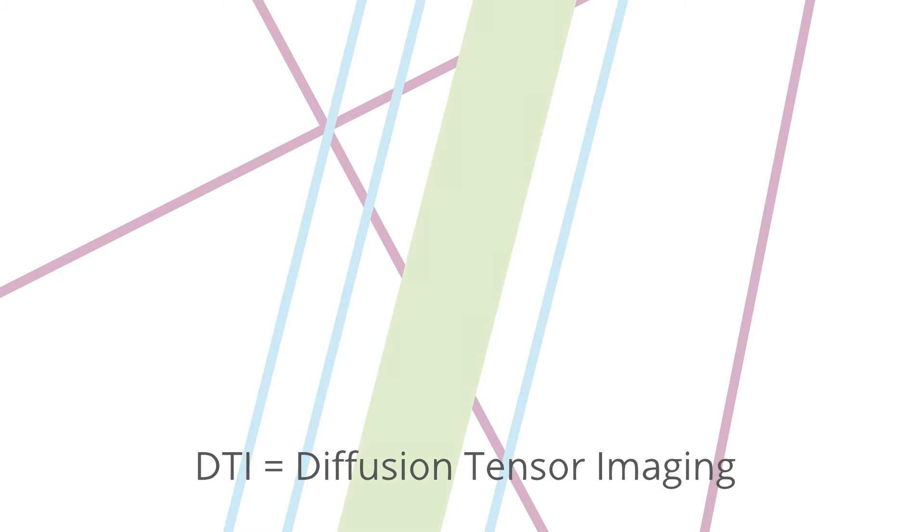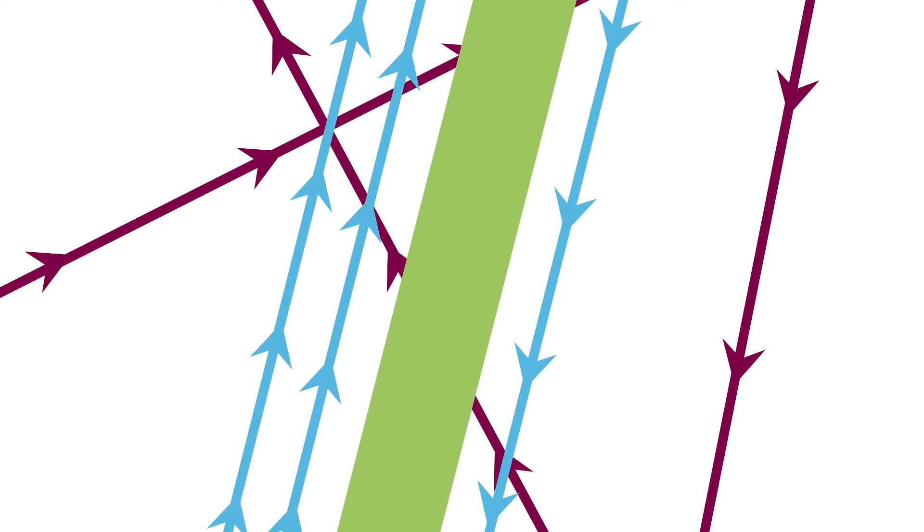The researchers are not only interested in the activated areas, but in which nerve fibers connect them. These connections of fibers can be shown using Diffusion Tensor Imaging – DTI for short. The DTI visualizes the movement of water molecules along the nerves and allows conclusions to be drawn about their course.